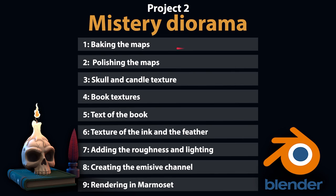In Project 2 we are going to change the workflow a little, because from this project we are going to have all the high poly and the low poly models. So the first thing we are going to do is extract all the details from the high poly model with map baking — we are going to do this in Marmoset, extracting the normal map, curvature map, ambient occlusion, among others. Then we are going to polish these maps a little, because we can improve some of them manually, and with all the maps ready we are going to start texturing.